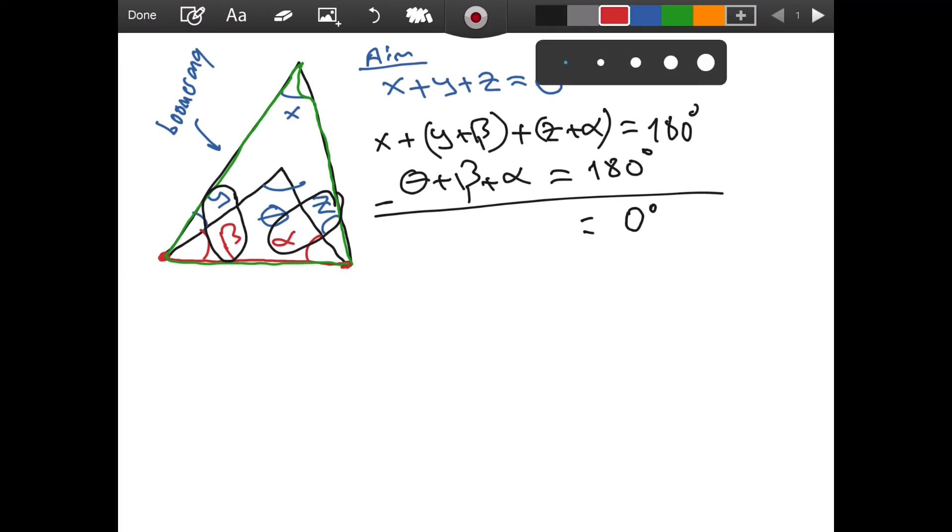And on the left, what we have is—well, we see that betas cancel here and alphas cancel here, so that we are left with x plus y plus z minus theta, right? Because we subtracted, that's why we put a minus sign here.